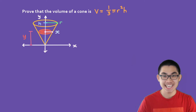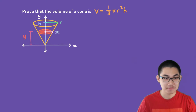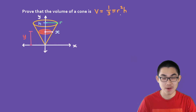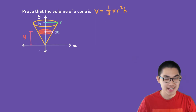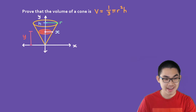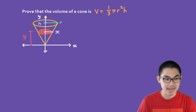Hi guys, welcome back. In this video I'm going to show you how to prove that the volume of a cone is V = 1/3 × π × r² × h. I've drawn a diagram of a cone here. The height of the cone is h, the radius is r, and if you cut the cone right here and look at the cut, you can see that it's a circle — this is what we call a cross section.